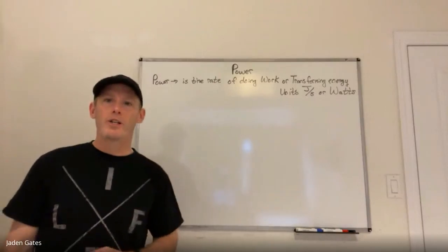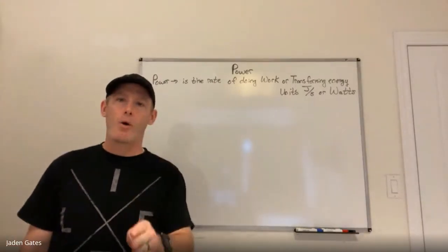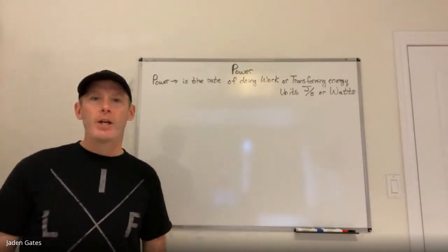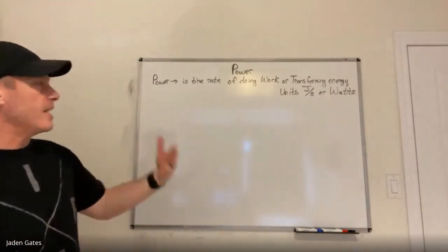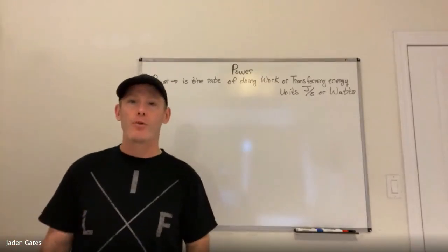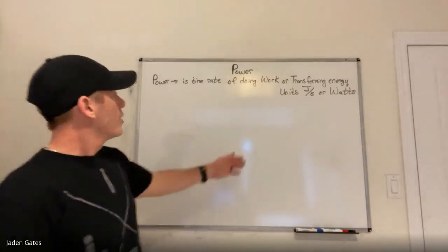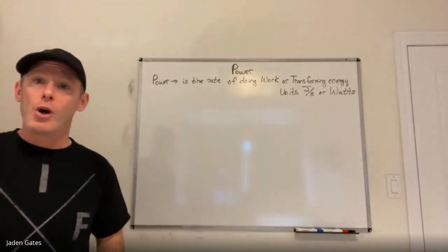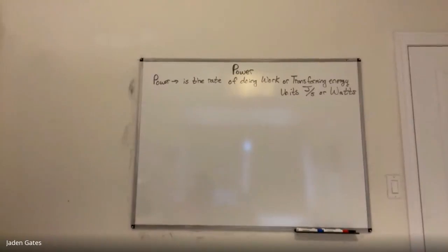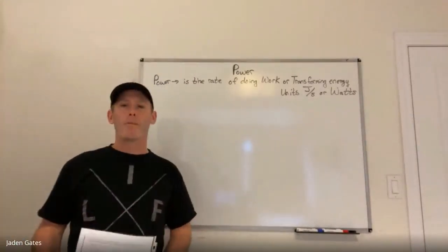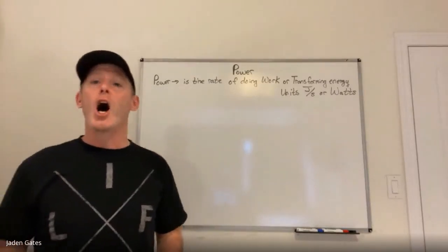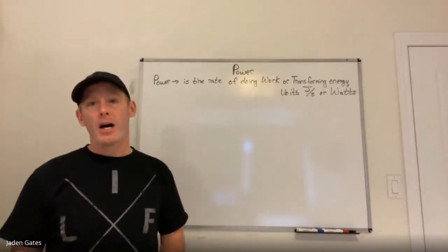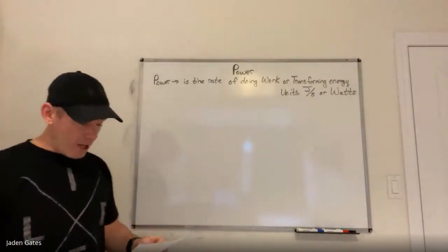We're continuing on with energy, and this time we're going to look at power. Power is the rate at which you can do work — adding energy to something or transforming energy. The units are joules per second, more commonly noted as watts. A 100-watt light bulb is much brighter than a 60-watt light bulb because it's using more energy to create light per second.